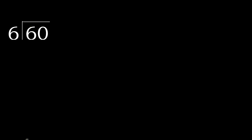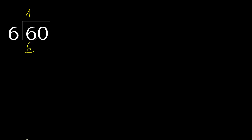60 divided by 6. 6 is not less, therefore work with 6. 6 multiplied by which number is nearest to 6 but not greater? 6 multiplied by 2 is 12, which is greater. Multiply by 1 is 6 — ok, that is not greater. 6 minus 6 is 0.